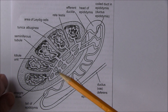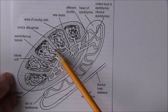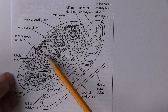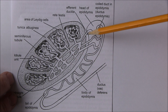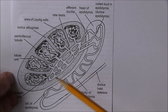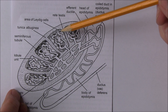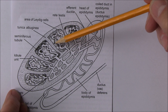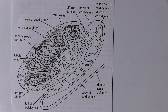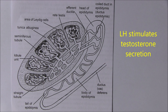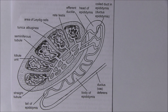In the testes, we have seminiferous tubules stimulated by FSH to produce sperm, which travel through a complicated system of ducts — through the epididymis and eventually out via the vas deferens during ejaculation. Around these tubules are interstitial cells, sometimes called the interstitial cells of Leydig, which are stimulated by luteinizing hormone to produce testosterone secreted into the blood. These cells secrete several androgens, but by far the most abundant is testosterone.